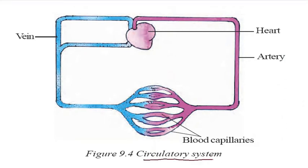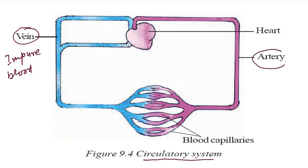Now it is the circulatory system — the circulatory system and the double circulatory system. First is the vein, which is the impure blood tube. The impure blood flows in veins, and the artery is the pure blood tube.